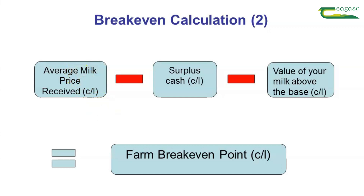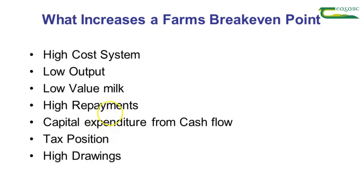When we take the surplus cash and the value of your milk above the base away from the average milk price received, we will get the farm break-even point. That is the base price the co-op needs to pay the farm to cover all costs associated to the farm.